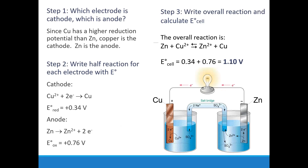We're going to stop there today. That was a lot to squeeze into one class, but hopefully you have a sense of what an electrochemical cell is. Make sure you understand the vocabulary: the anode, the cathode, the salt bridge, the direction electrons travel. You'll need to sketch these things and label them. Understand what the voltage is — the cell potential — and how to use the chart to get the cell potential for a reaction. We're going to practice this again tomorrow in class.